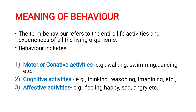Behavior includes three types of activities. The first is motor activities, also called conative activities — examples include walking, swimming, dancing, running, and cycling. The second type is cognitive activities, which involve higher mental functions such as thinking, reasoning, imagining, intelligence, and judgment — anything involving higher mental functions of the brain is called a cognitive activity.